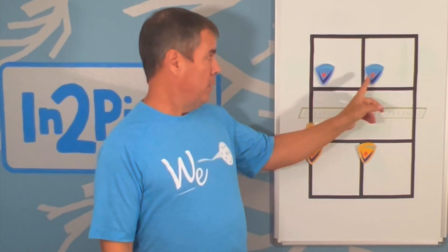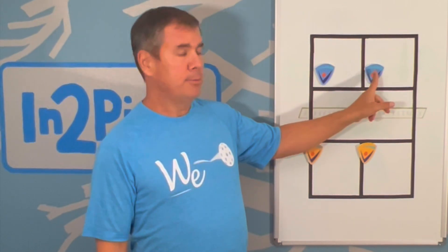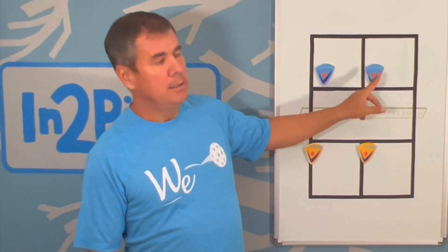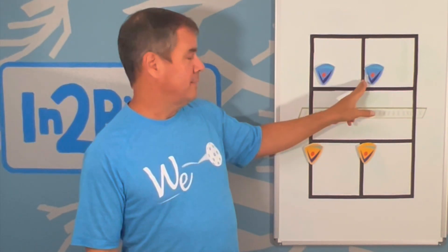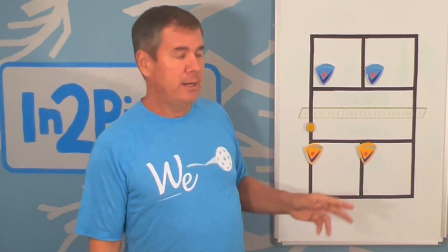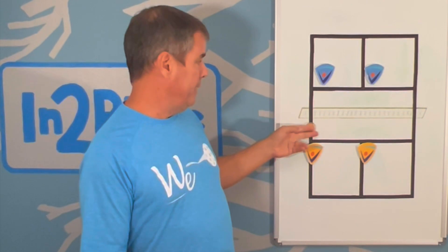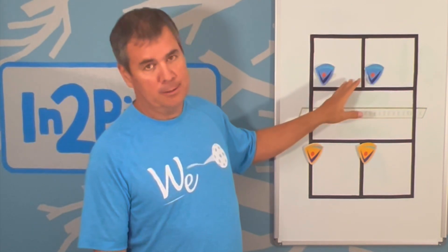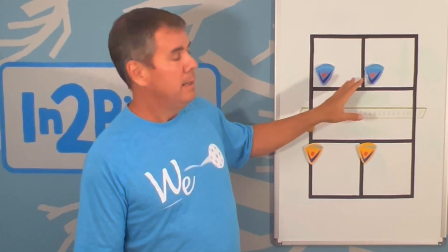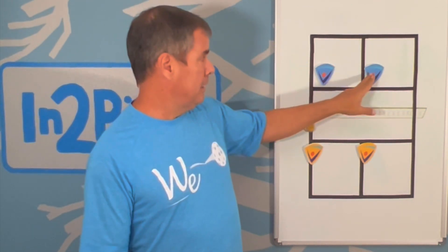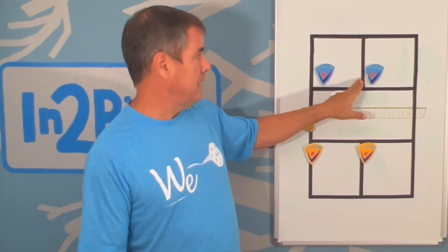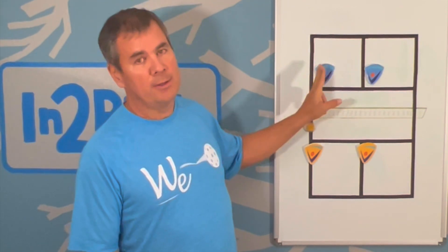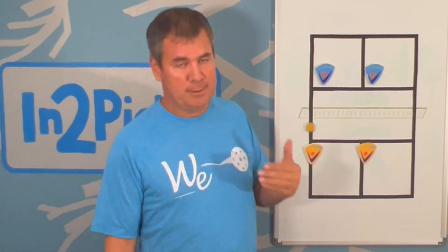The question that we got was whether the player on the blue team here should cross the center line in order to hit a ball hit from this direction over onto the blue side of the court — whether this player should cross the center line to hit it, or whether this player should hit the ball.